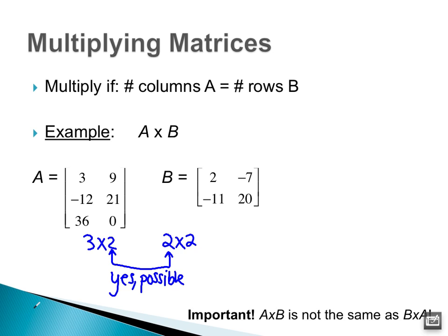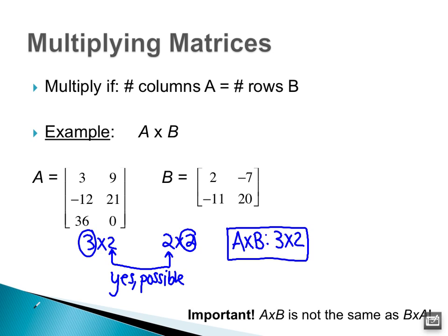The dimensions of the product — A multiplied by B — are going to be the first number and the last number. So A multiplied by B is going to be three by two. Now, this note is really important: A multiplied by B is not the same as B multiplied by A. Let's look at B multiplied by A. B is two by two, A is three by two. These two do not match, so this is not possible.